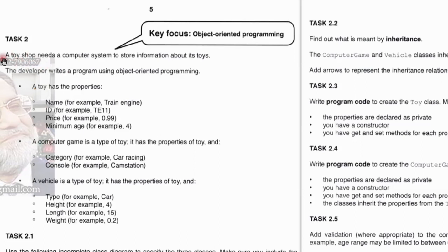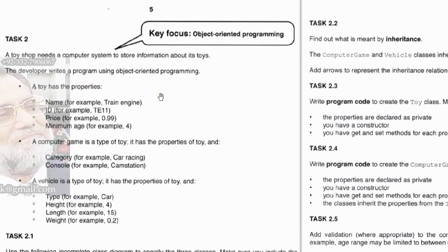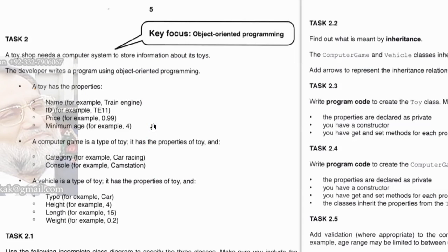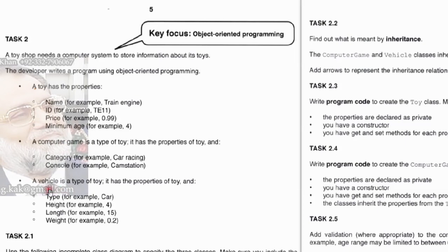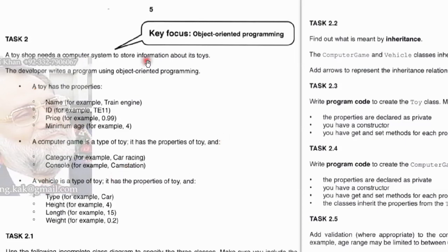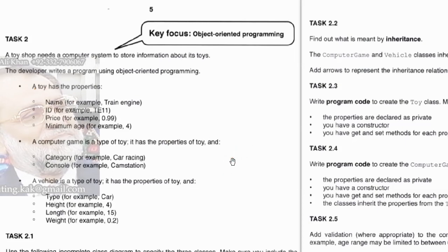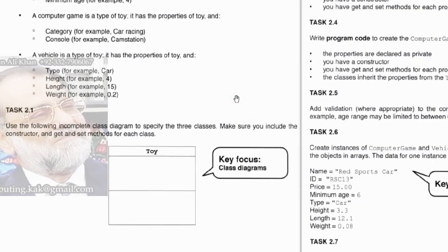Task 2 starts with the statement: there is a toy shop that needs a computer system to store information about its toys, and OOP has to be used. These are the properties associated with the toy, and this would be a class. The superclass will be called Toy, one subclass is ComputerGame, and another subclass is Vehicle. This is the basic class diagram description of task 2, and on the basis of this description there are 10 tasks to be performed.